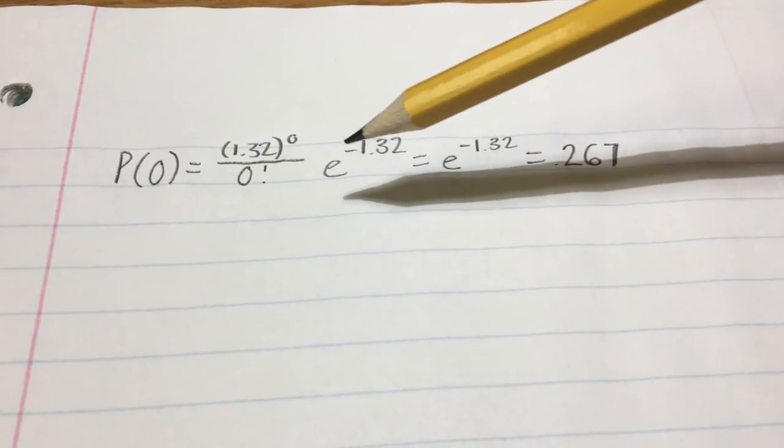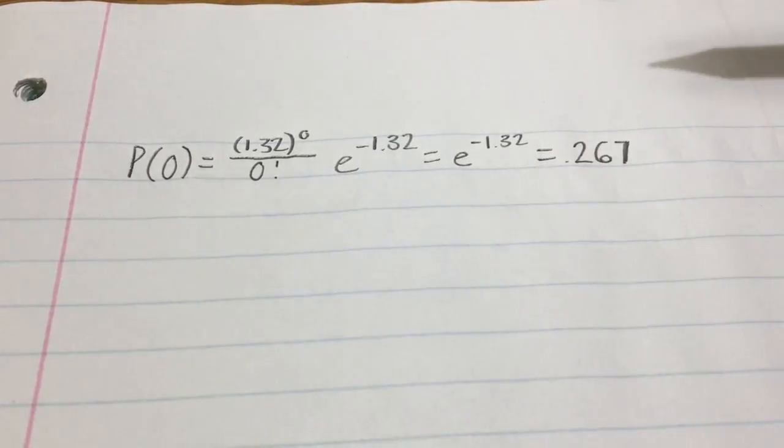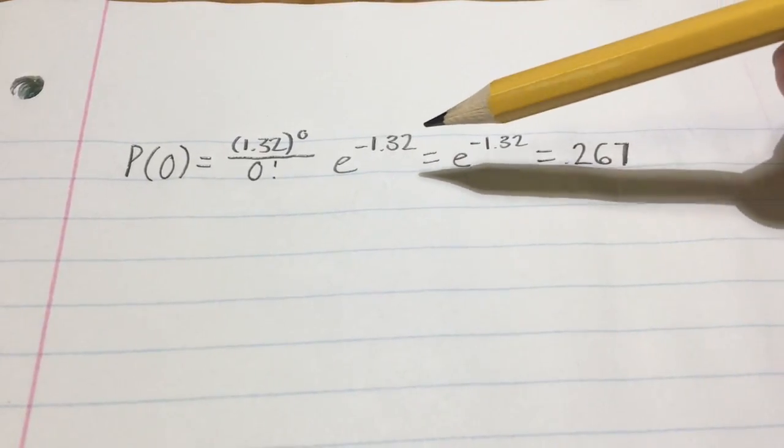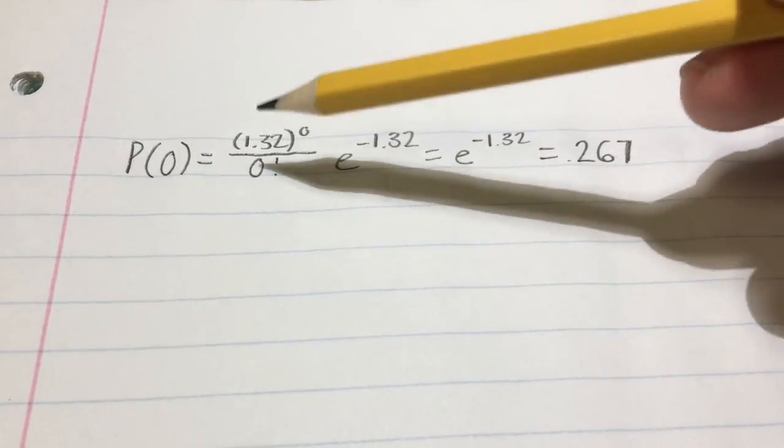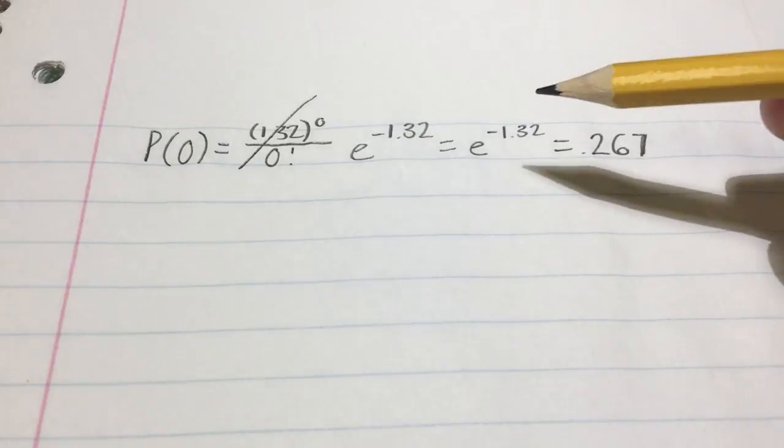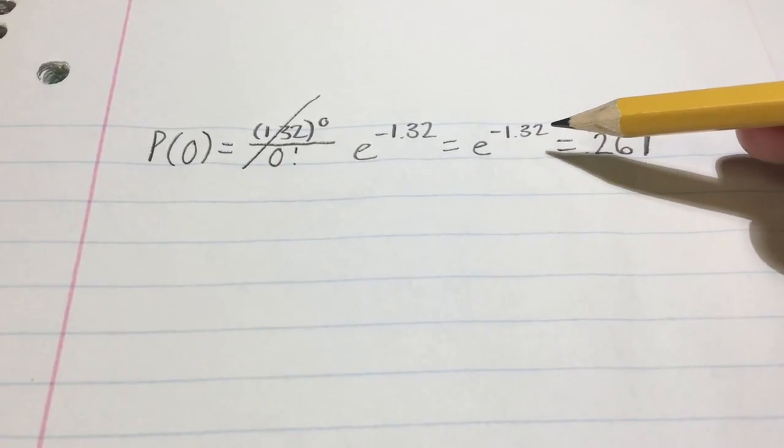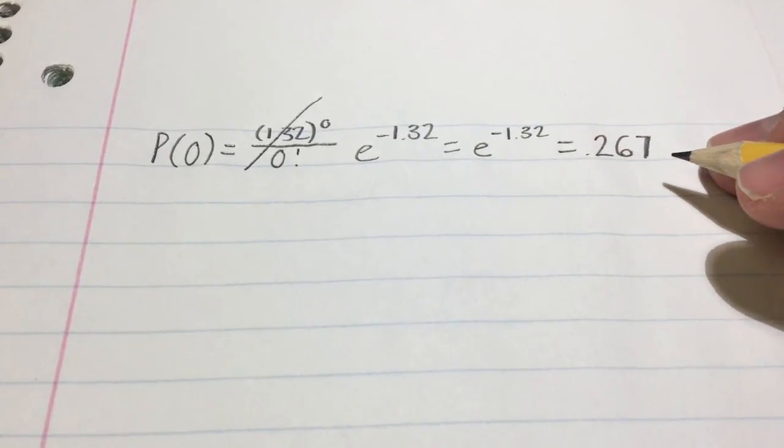And then we would already have e, and since it would be to our negative lambda here, now we would just plug this into a calculator. Since it would be divided by zero factorial, we can simply cross that out. It would just become e to the negative 1.32 power, which, if you were to input it into a calculator...